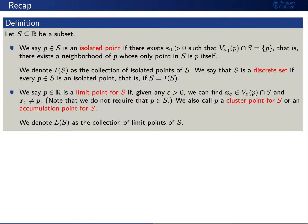We'll say that a real number p is a limit point for S if, given any positive epsilon, we can find an x sub epsilon in the intersection of V sub epsilon of p with S, and x sub epsilon does not equal p. We'll denote L(S) as the collection of limit points of S.